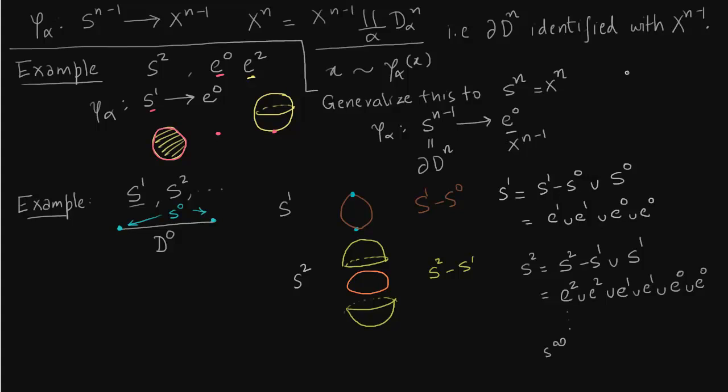Now I want to point out the crucial difference between the first example and the second example. So in the first example S^2 does not contain S^1 because S^1 has a cell called e^1 and S^2 has a cell e^0 and e^2. So e^1 is not in S^2.